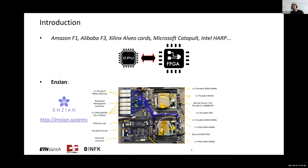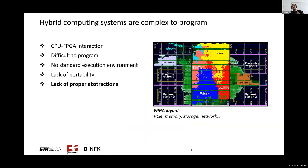However, as there's no free lunch, the main problem with these systems is their complexity. On one side we have a CPU, on the other we have an FPGA, maybe with external IO on the FPGA side — storage, network, memory. All of this compounds to the overall complexity. This picture shows one of the earlier layouts of Coyote, and as you can see, it can get quite messy quite quickly.